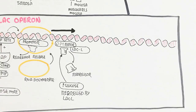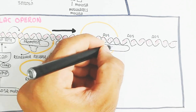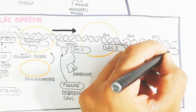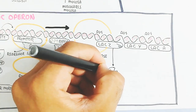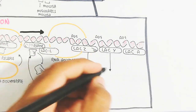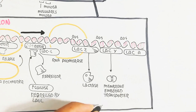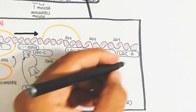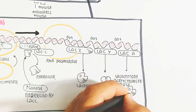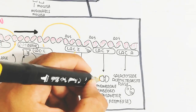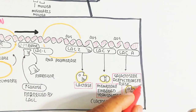RNA polymerase transcribes the lac Z, lac Y, and lac A genes, terminating at stop codons. The lac Z gene produces the lactase enzyme (beta-galactosidase). The lac Y gene produces lactose permease, a membrane-embedded transporter that allows lactose to enter the bacteria from the digestive system. The lac A gene produces galactoside acetyltransferase, involved in galactose influx into the bacterial cell.